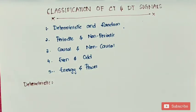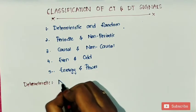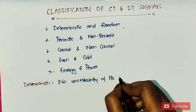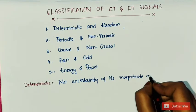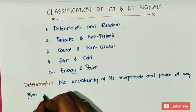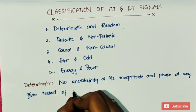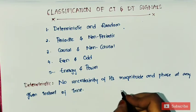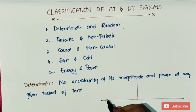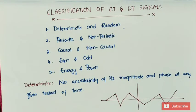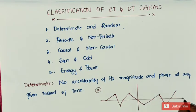In random signals, the signal occurs with uncertainty. In deterministic signals there is no uncertainty of magnitude and phase at any given instant of time. Let us see an example: this signal is an example of a deterministic signal. In figure A you can observe that there is no uncertainty in magnitude and phase at any instant of time.